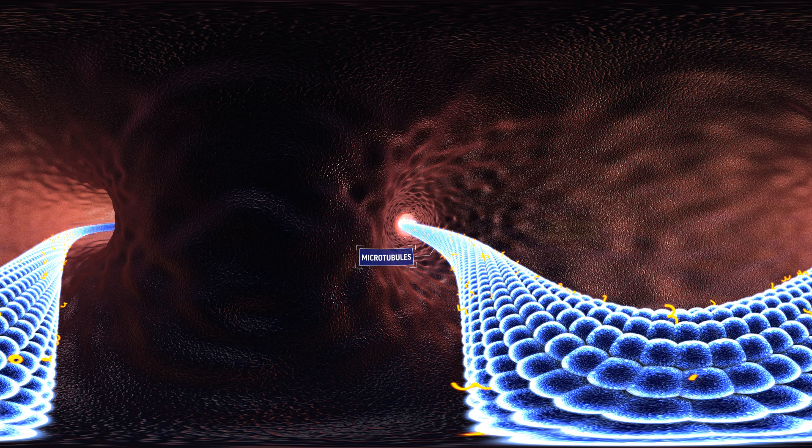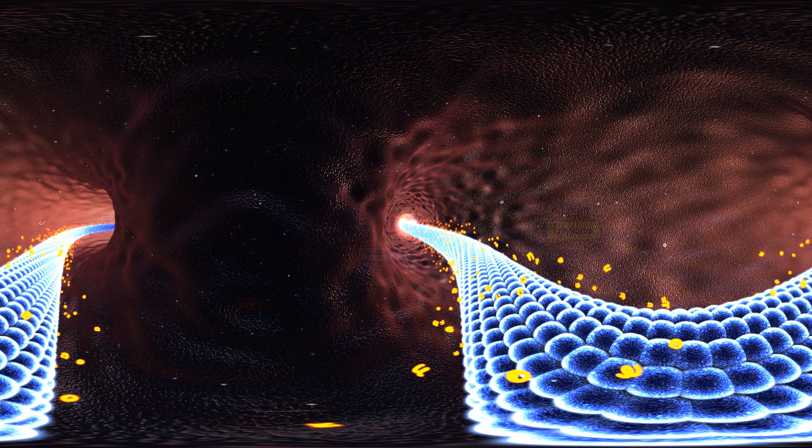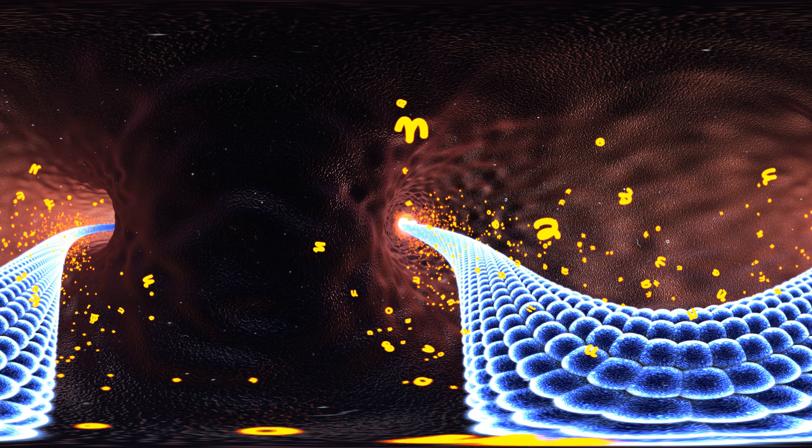In Alzheimer's disease, tau becomes abnormal. The strands shown in yellow twist into tangles that can't support those microtubules. The transport system collapses, and as a result, the cell eventually dies.